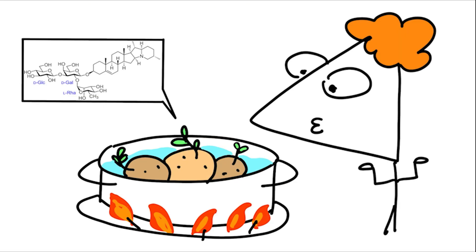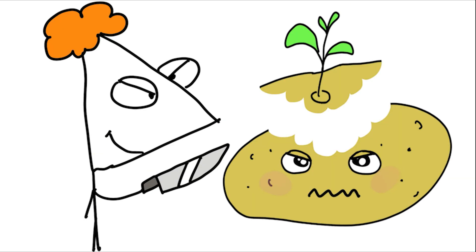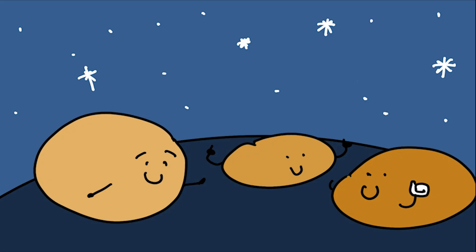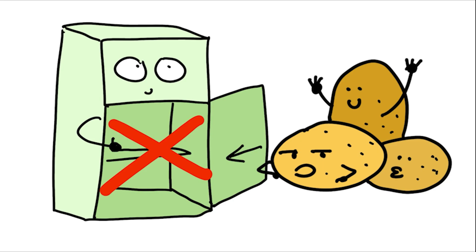Worse, the toxin isn't destroyed by cooking. Remove all green areas and deep sprouts entirely. Better yet, discard any potato that's shriveled, discolored, or heavily sprouted. Always store potatoes in a cool, dark place away from light. Don't keep them in the fridge—cold temps boost solanine production.